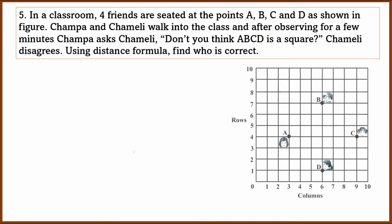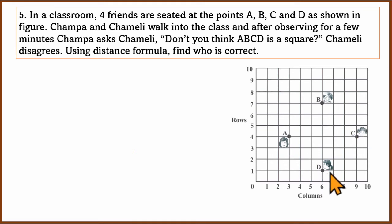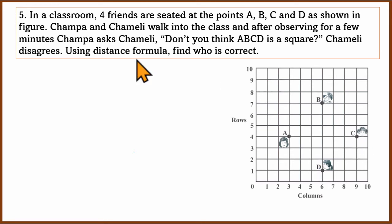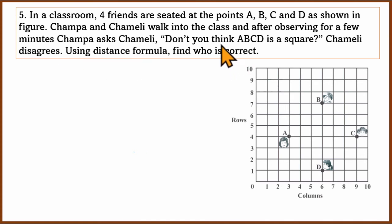The fifth question: in a classroom, four friends are seated at points A, B, C, D as shown in the figure. The seating can be thought of as a coordinate grid — rows and columns like a chessboard mapped to coordinate geometry. Champa and Chameli walk into class; Champa asks Chameli, 'Don't you think ABCD is a square?' Chameli disagrees. Using the distance formula, we need to find who is correct.